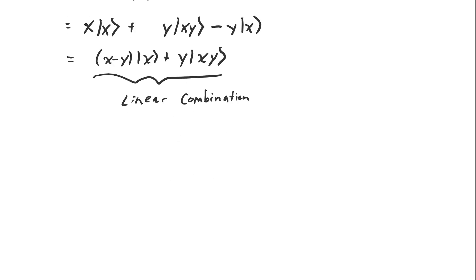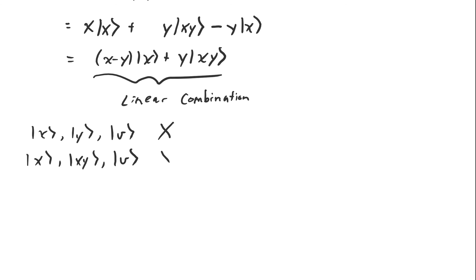So the three vectors X, Y, and V are linearly dependent because V is a linear combination of X and Y. And X, XY, and V are also a linearly dependent group, because V can also be expressed as a linear combination of X and XY. It would seem like any time we have three or more vectors in the plane, they're going to be linearly dependent — either because one of the vectors is a scalar multiple of one of the others, like having vector X and the vector 2X, or if that isn't the case, then we can take two vectors that aren't scalar multiples of each other, like X and XY, and reach any other vector in the plane. So the result we've arrived at informally is that at most two vectors in the plane can be linearly independent.